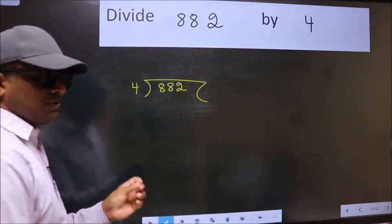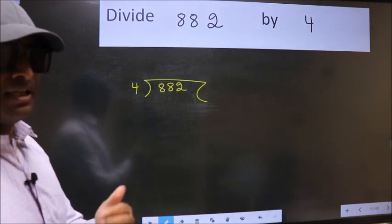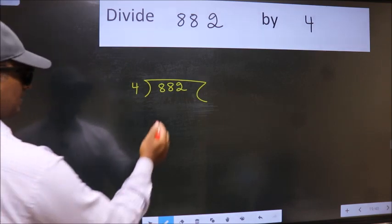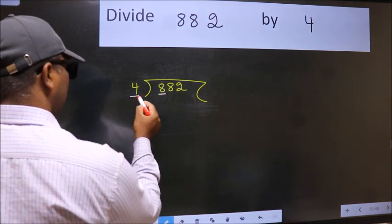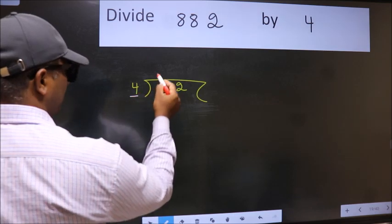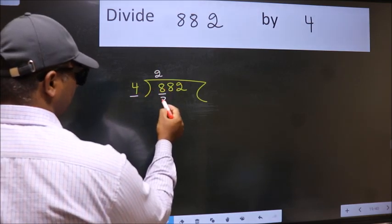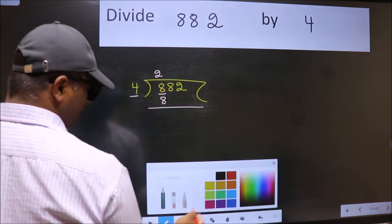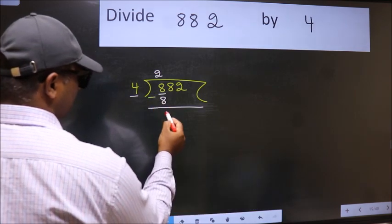This is your step 1. Next, here we have 8 and here 4. When do we get 8 in 4 table? 4 twos, 8. Now we should subtract. We get 0.